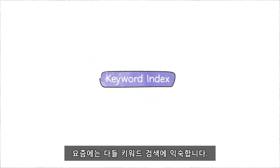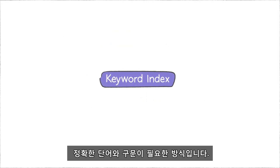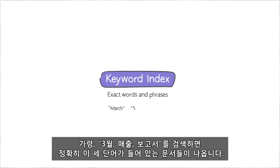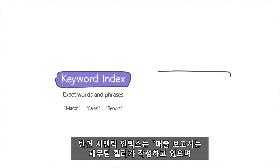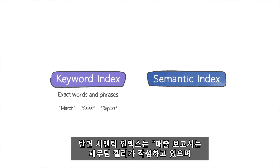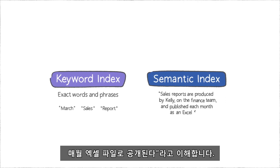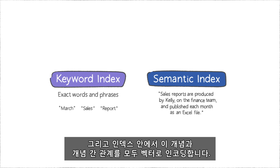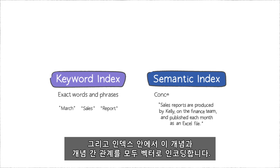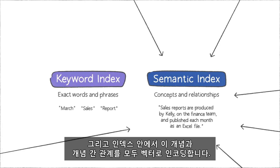Today, people are mostly familiar with keyword search, which relies on exact words and phrases. So when you search for "March sales report," you get a list of documents that include exactly those three words. But a semantic index understands that sales reports are produced by Kelly on the finance team and published each month as an Excel file, encoding all of these concepts and relationships between concepts in vectors in the index.